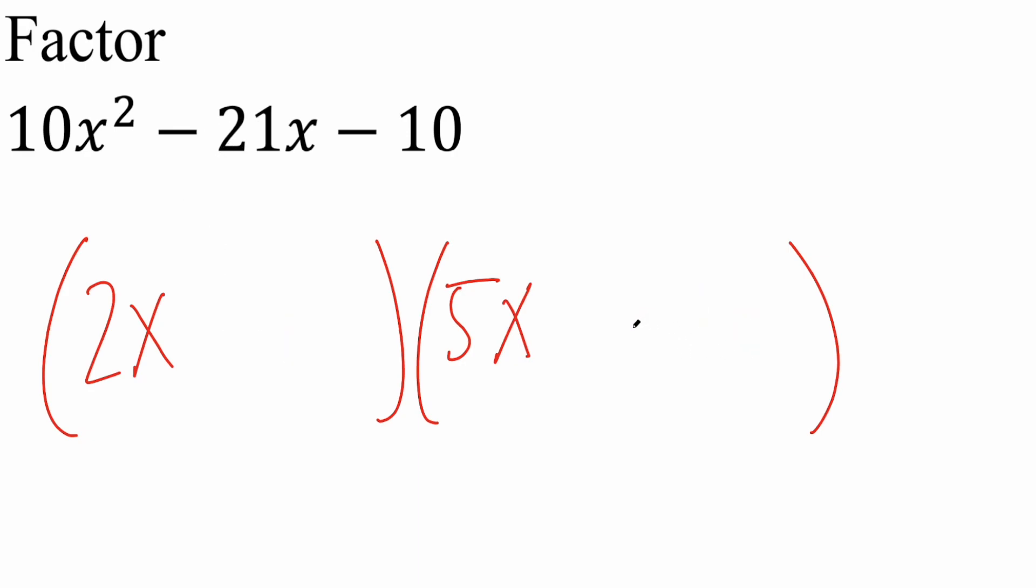Next, we can try making this into a plus 2, and this one into a negative 5, and we'll try it. So 2x times 2 is 4x. 5x times negative 5 is negative 25x. And negative 25x plus 4x is in fact negative 21x. So this right here is correct.